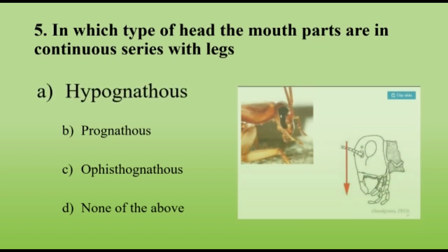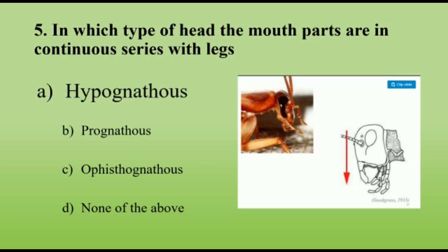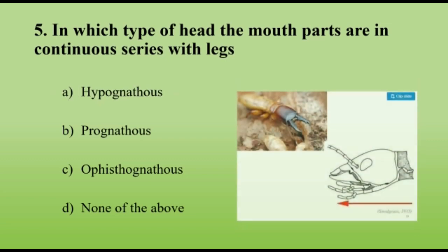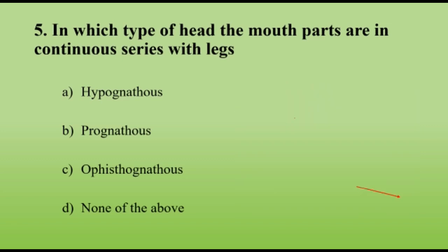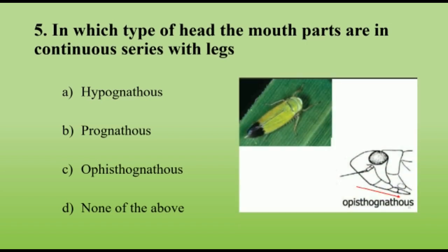In which type of head are the mouthparts in continuous series with legs? Hypognathous type of mouthparts. Hypo means below and gnathous means jaw. In this case the long axis of the head is vertical and in line with that of the legs, perpendicular to the long axis of the body. In Prognathous type, the long axis of the head is horizontal and in line with the long axis of the body — also called the Coleoptera type, seen in beetles. Opisthognathous type is seen in bugs, also known as the hemipterous type, where the head is deflexed and kept in between the first pair of legs.